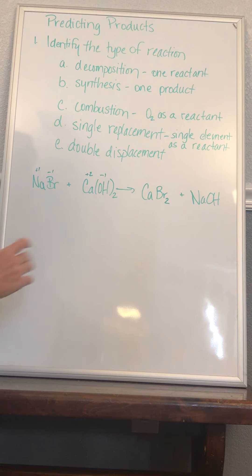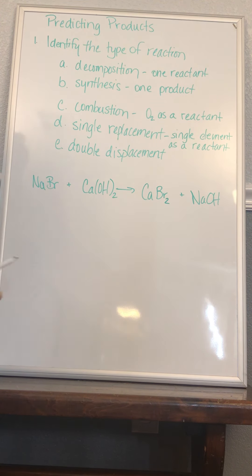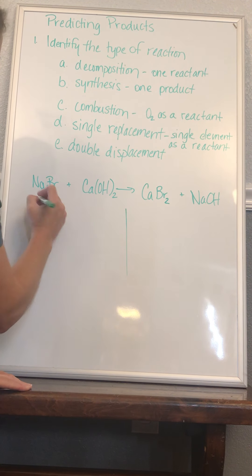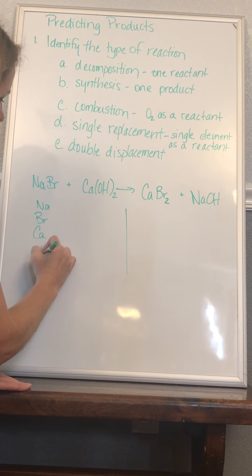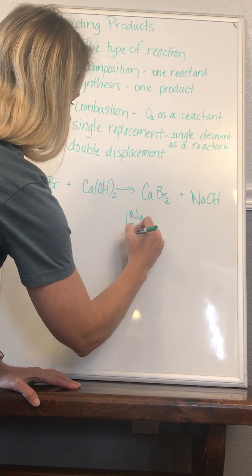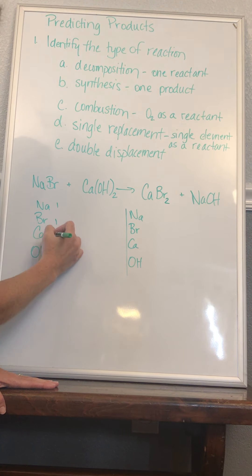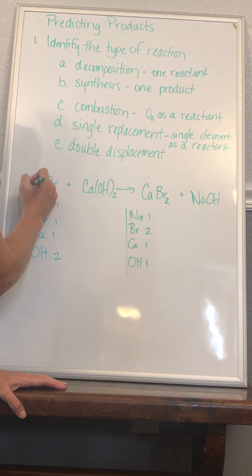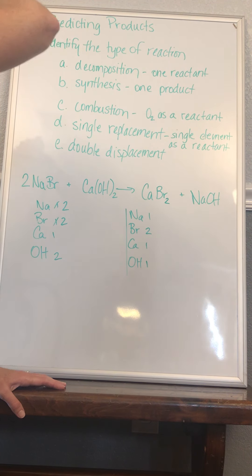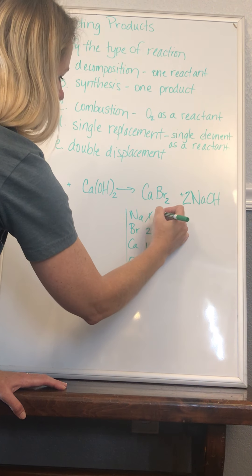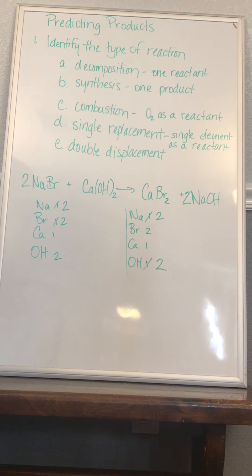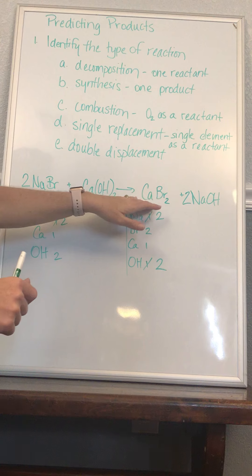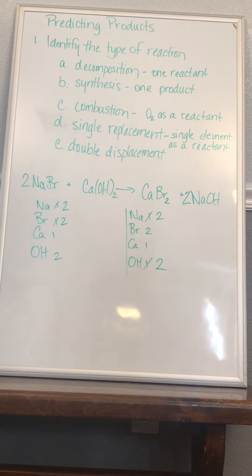To balance this equation, we draw our line down and track Na, Br, Ca, and OH (kept together since it stays intact on both sides). On the left we have one Na, one Br, one Ca, one OH, and two Br. We put a coefficient of 2 in front of NaBr on the left, then a 2 in front of NaOH on the right — adjusting until everything is balanced and equal. First we identified the reaction type, then determined products, then balanced the equation.